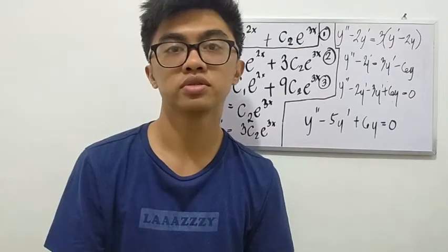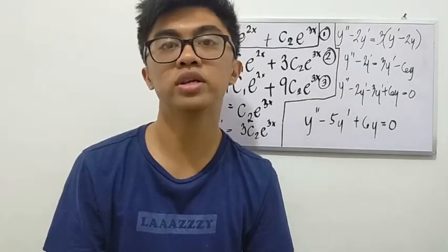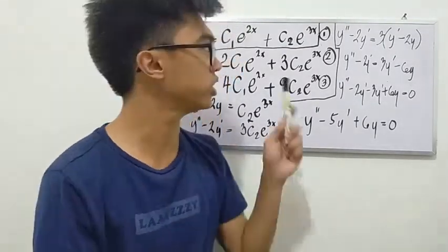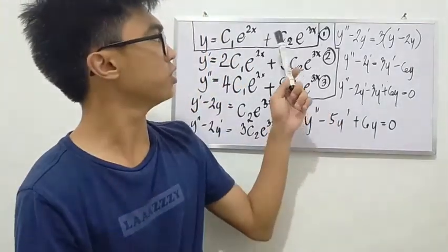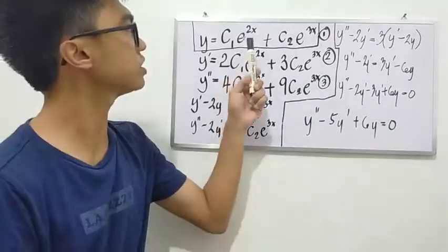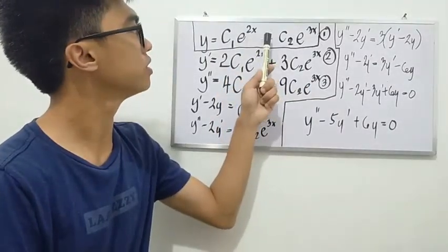First thing to do is to know how many constants are there in the equation. The number of constants will be the number of derivatives that you are going to use.